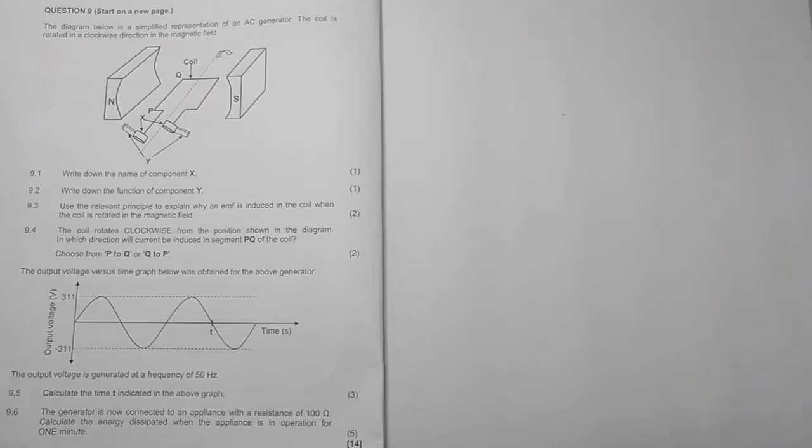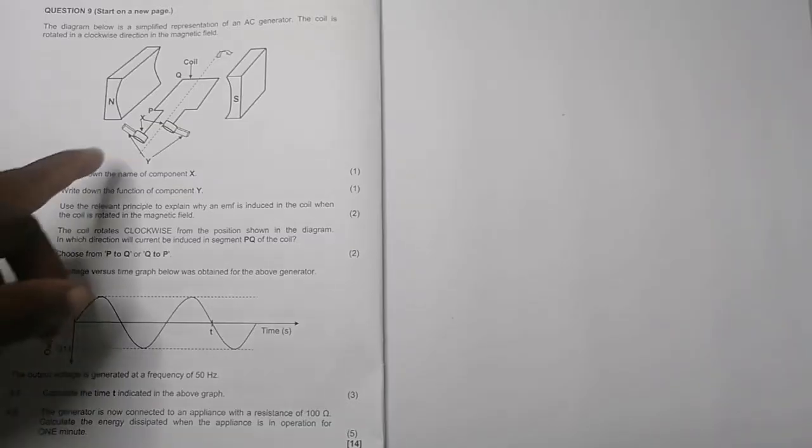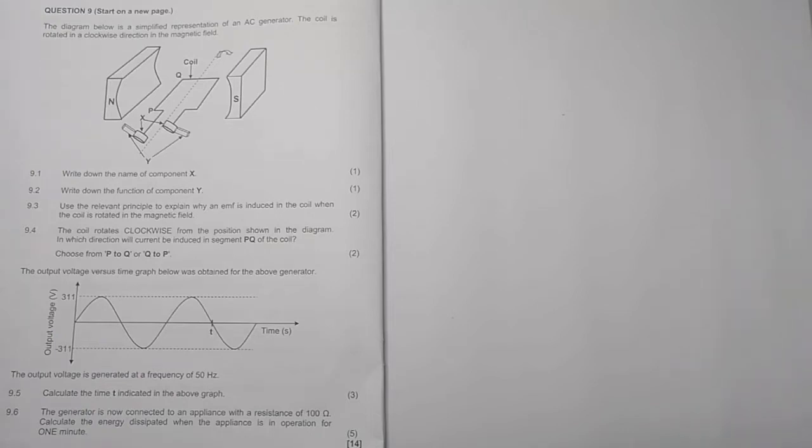These are the guys that make sure that current is, or rather, this thing is an AC generator. It's moving in half cycles. The function of component Y - those are called brushes. They ensure that there is electrical connectivity, or in this case they ensure that current is able to flow through the armature.